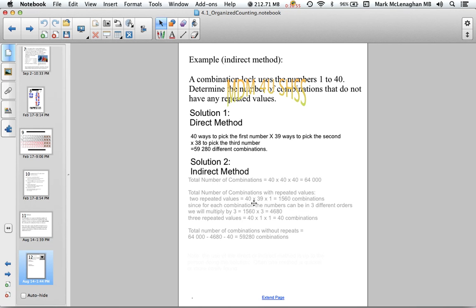Using the indirect method: the first number we calculate is the total number of combinations, so that's 40 × 40 × 40 = 64,000. Total number of combinations with repeated values: we have two repeats, so 40 × 39 × 1 = 1,560 combinations. Since we can rearrange those three numbers in three different ways, we multiply by 3: 1,560 × 3 = 4,680. Three repeated values, so all three numbers are the same: 40 × 1 × 1 = 40 choices.